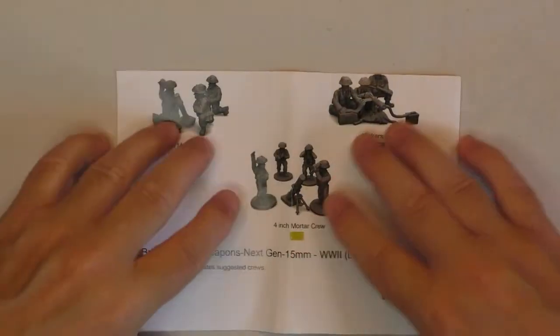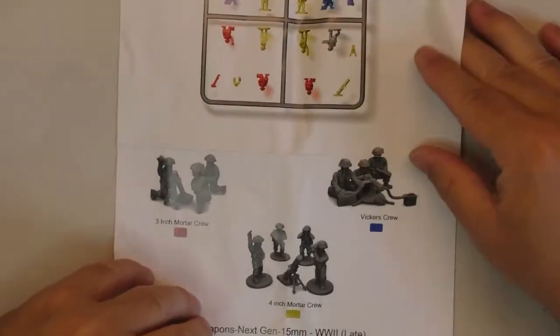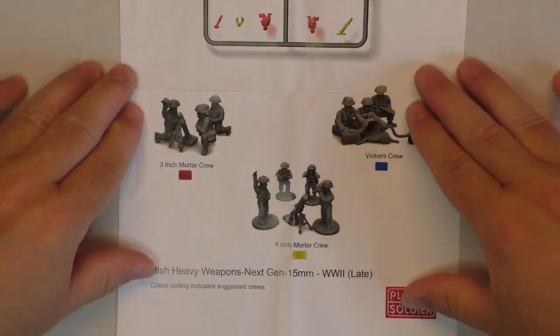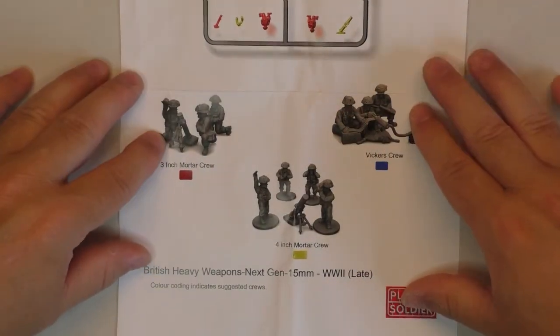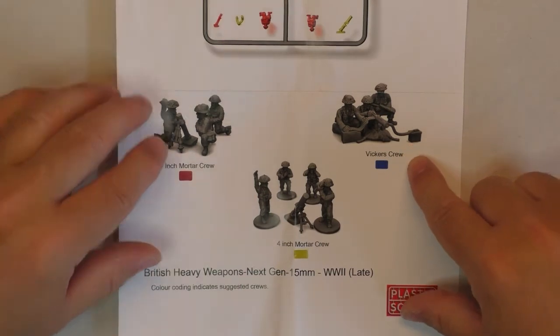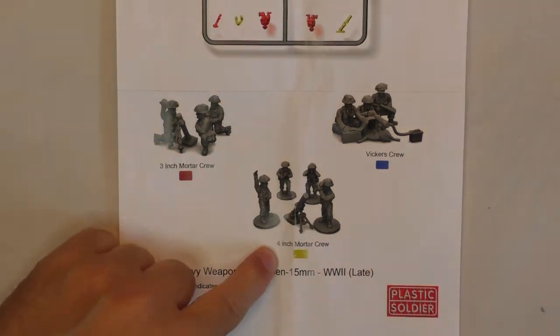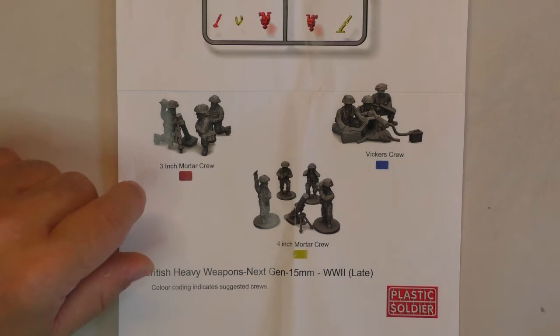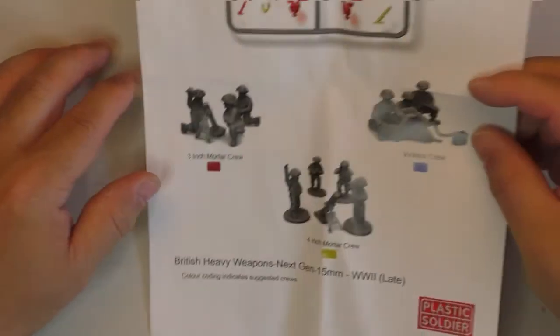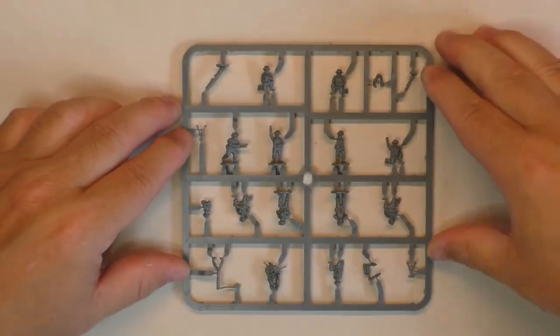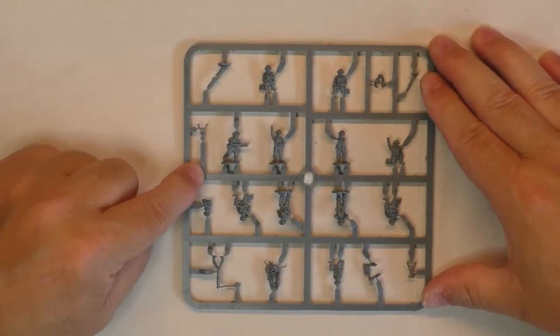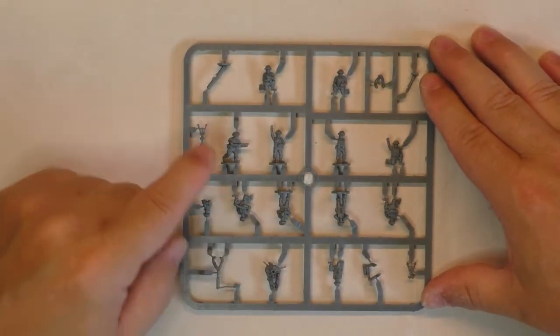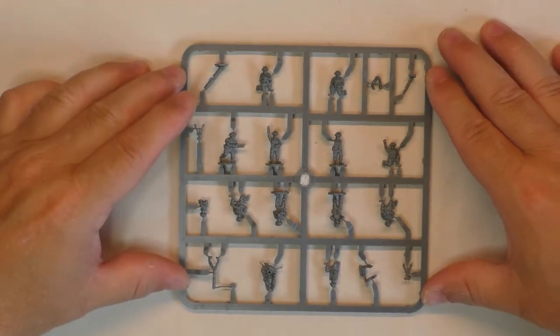So like I said, on the bottom of the page we have the three-inch mortar position, the Vickers position, and the four-inch mortar crew as suggested by Plastic Soldier. There are four sprues inside the kit, so we got one team of each in each sprue.